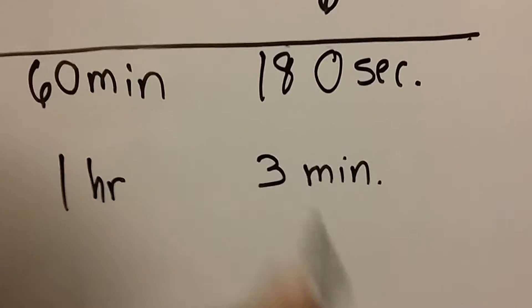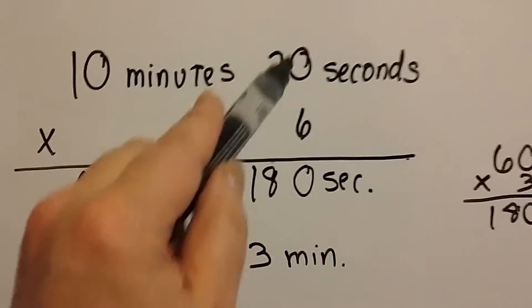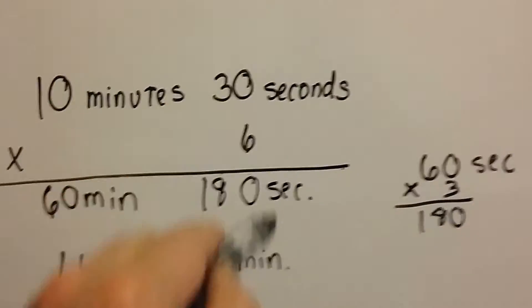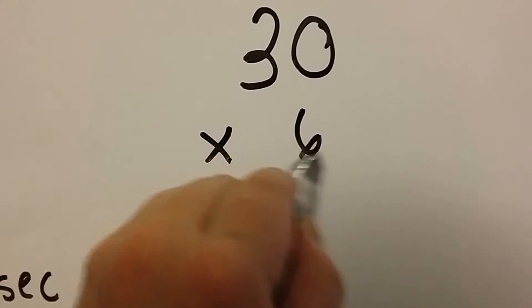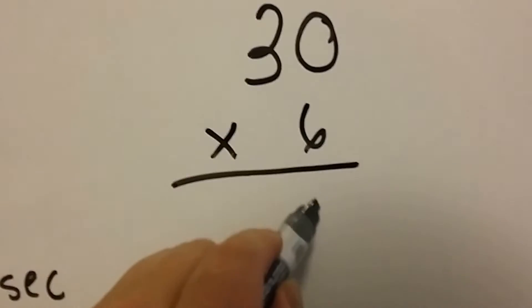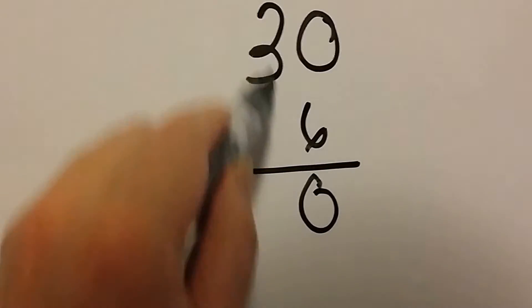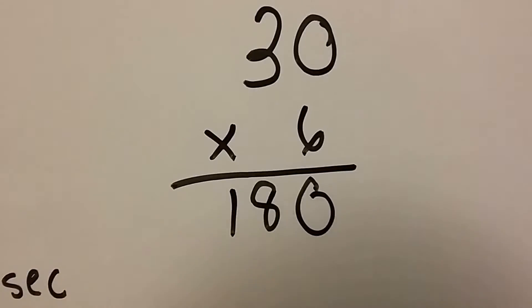That's how we got one hour and three minutes. So when you're doing this part, when you're multiplying a two-digit number by a one-digit number, you just do the 6 times 0, which is 0, and the 3 times 6, which is 18, and it's 180.